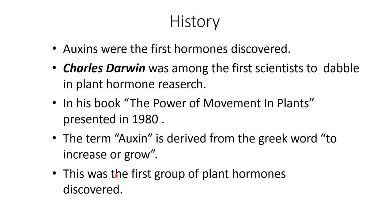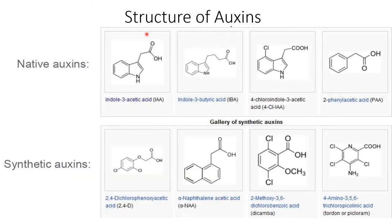This was the first group of plant hormones discovered. The structure of auxins: one is native auxin and another one is synthetic auxin. In native auxin, examples are indole-3-acetic acid (IAA), indole-3-butyric acid (IBA), 4-chloro-indole-3-acetic acid, and 2-phenyl acetic acid (PAA). In case of synthetic auxin, examples are 2,4-D (2,4-dichlorophenoxyacetic acid), alpha-naphthalene acetic acid, 2-methoxy-3,6-dichlorobenzoic acid, and 4-amino-3,5,6-trichloropicolinic acid.